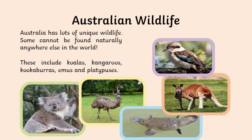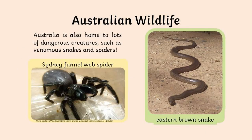Australia is quite famous for its unique and varied wildlife. Some of these animals cannot be found anywhere else in the world — only in Australia — such as koalas, kangaroos, kookaburras, emus, and platypuses. Some people actually visit Australia just to experience its wildlife. Australia is also home to some dangerous creatures, such as venomous snakes and spiders, including the Sydney funnel-web spider and the eastern brown snake.